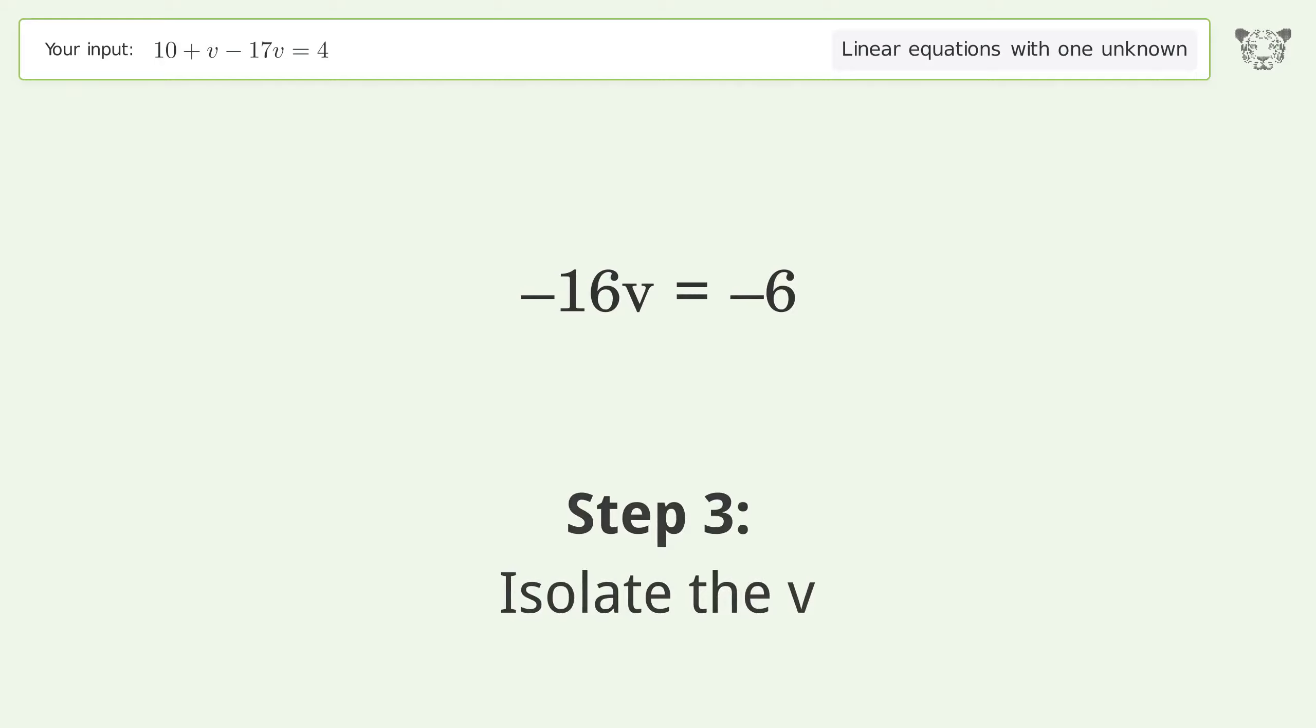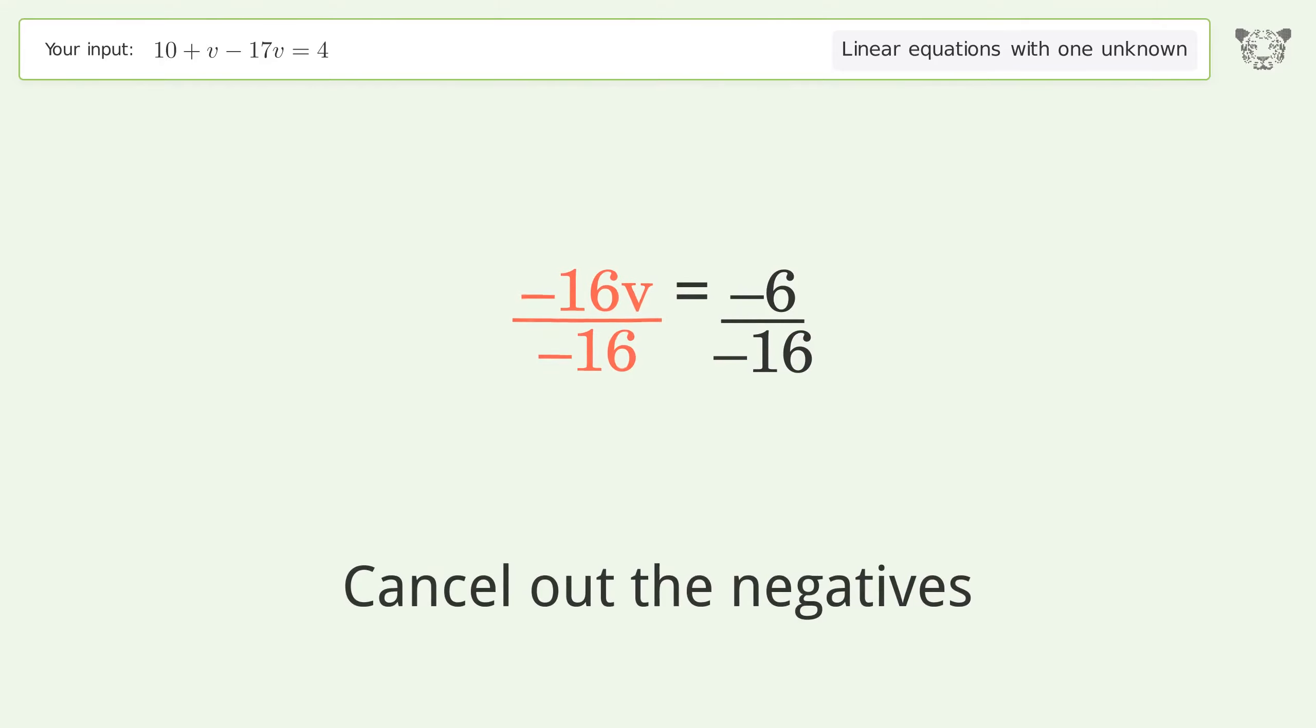Isolate the v. Divide both sides by negative 16. Cancel out the negatives. Simplify the fraction.